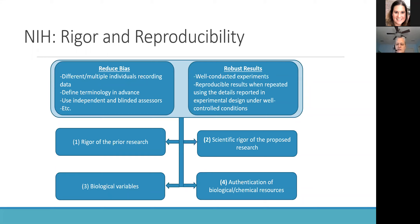The second key area is scientific rigor of your proposed research. Not only do you have to say how rigorous the prior research was and where the gaps were, but in addressing those gaps, how is your research going to be rigorous moving forward? This means the description of the proposed experiments needs to include a discussion of how bias is going to be mitigated or avoided, and an emphasis on experimental design and methods that achieve robust and unbiased results.